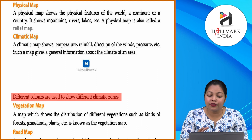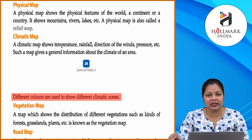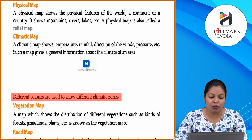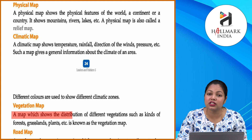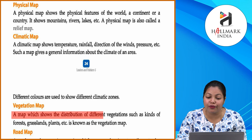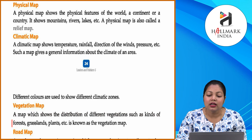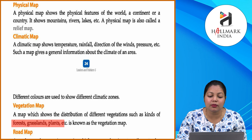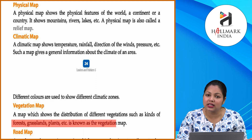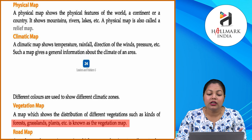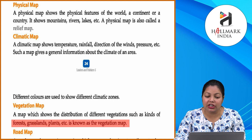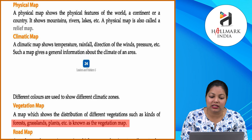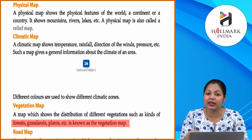Vegetation map: A map that shows the distribution of different vegetation such as kinds of forests, grasslands, plants, etc. is known as a vegetation map. Vegetation map par distribution dikhai jati hai different vegetation ki — jaise ke forest, grassland, plants.